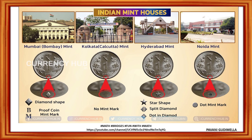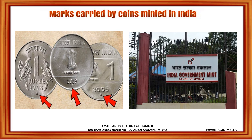These are the different symbols which have been given. For example, a diamond shape and no mint mark — no mint mark means it's Kolkata, a star shape, and a dot mint mark. These symbols are known as mint marks. A mint is a place where coins have been manufactured.